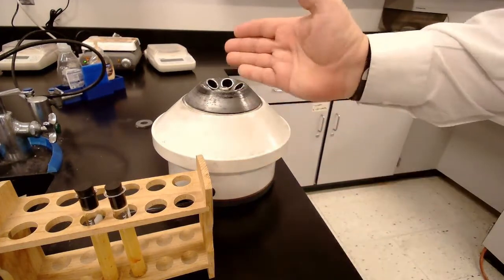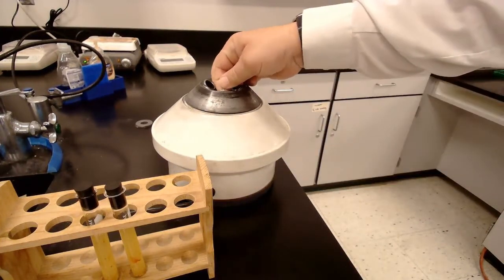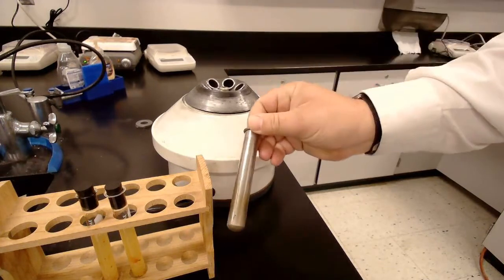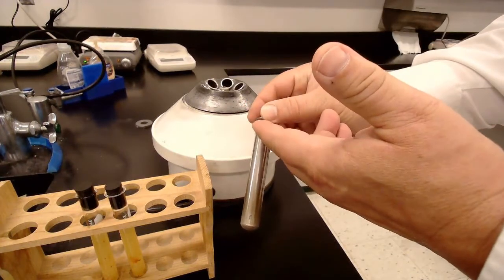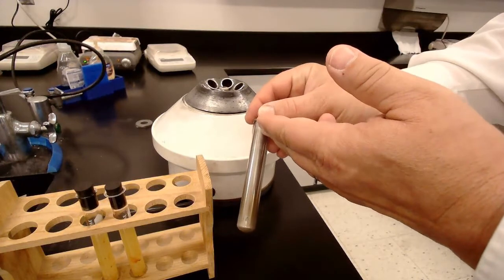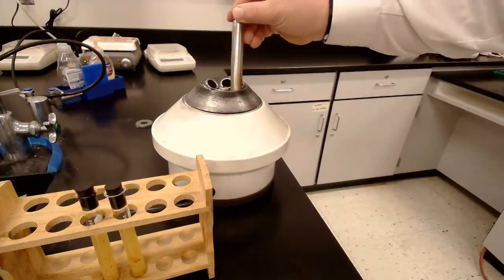The more dense objects will go towards the bottom of the tube, whereas the less dense objects will stay towards the top of the tube, because the heavier it is, the more it's affected by the spinning.